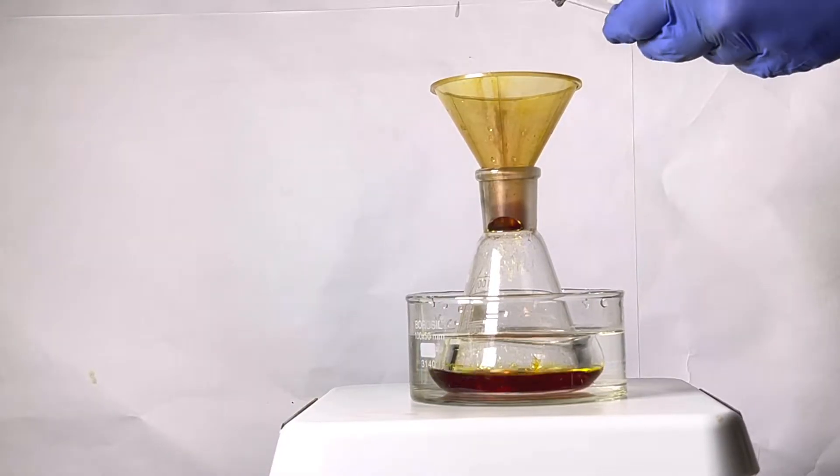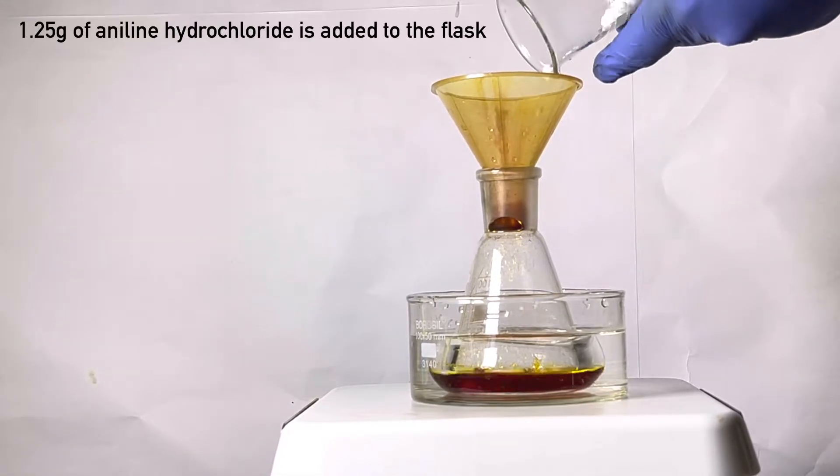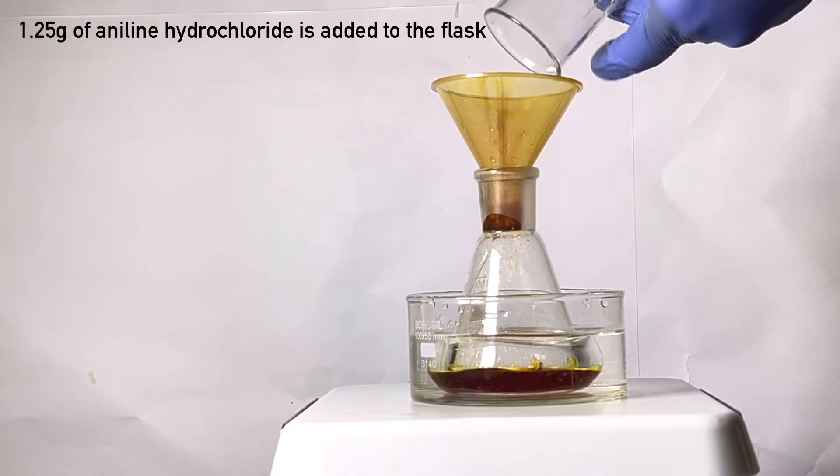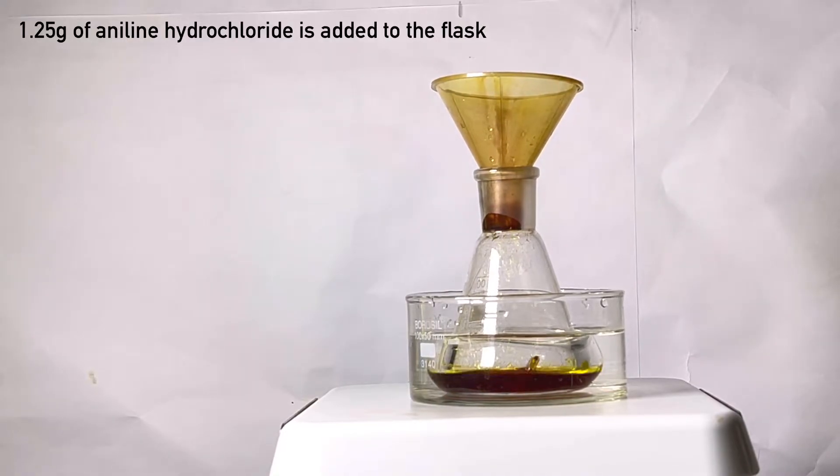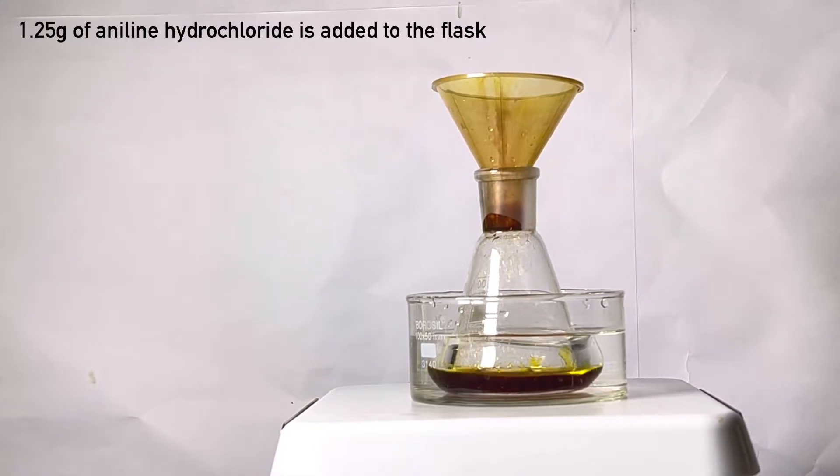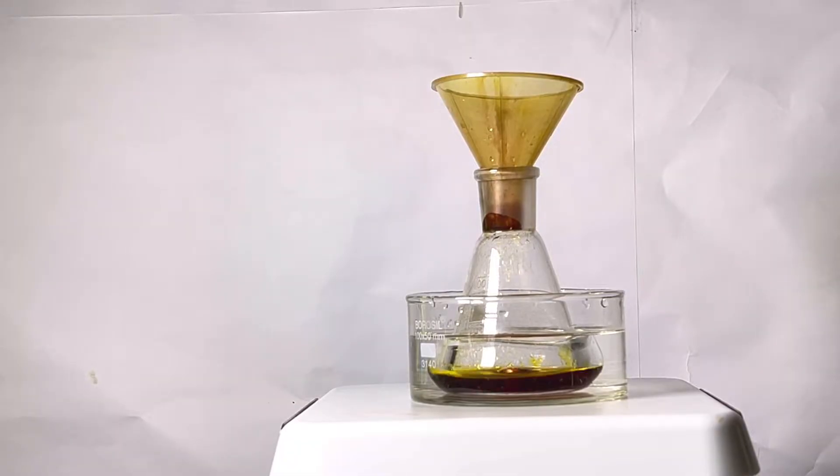Now, with the stirring turned on, 1.25 grams of aniline hydrochloride was added to the flask. It was prepared very easily by adding some aniline to cold, concentrated hydrochloric acid, which immediately precipitates out as white-colored aniline hydrochloride.